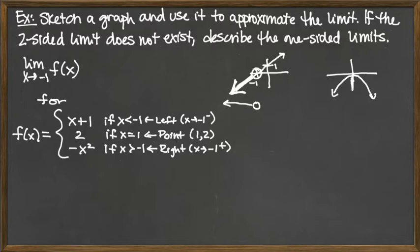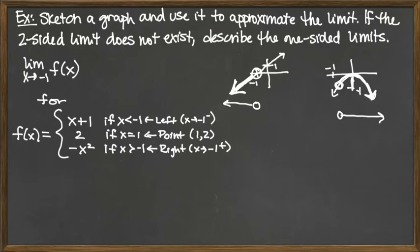For the parabola, at x equals negative 1: plugging negative 1 into the parabola, negative 1 squared is positive 1, and then the negative out front gives us negative 1. So we're looking at the point negative 1, comma negative 1. Since x is greater than negative 1 is to the right, we take the right-hand part of the parabola starting at the hole at negative 1, comma negative 1.